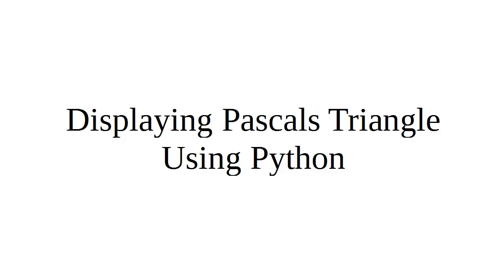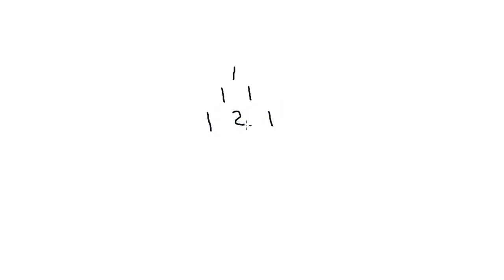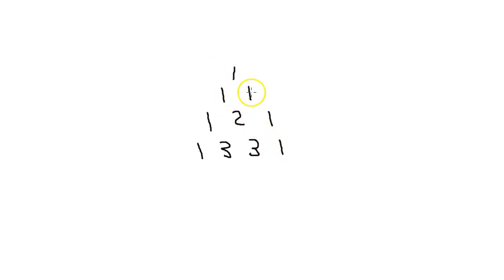I want to show you how to display Pascal's triangle using Python — we're going to calculate and display Pascal's triangle. First of all, what is Pascal's triangle? It's a nice little shape of numbers: you've got ones, and then two, and then three. Each number is generated by taking the sum of the two numbers above it. The outside edges are all ones, and the numbers below are the sums of the two numbers above.